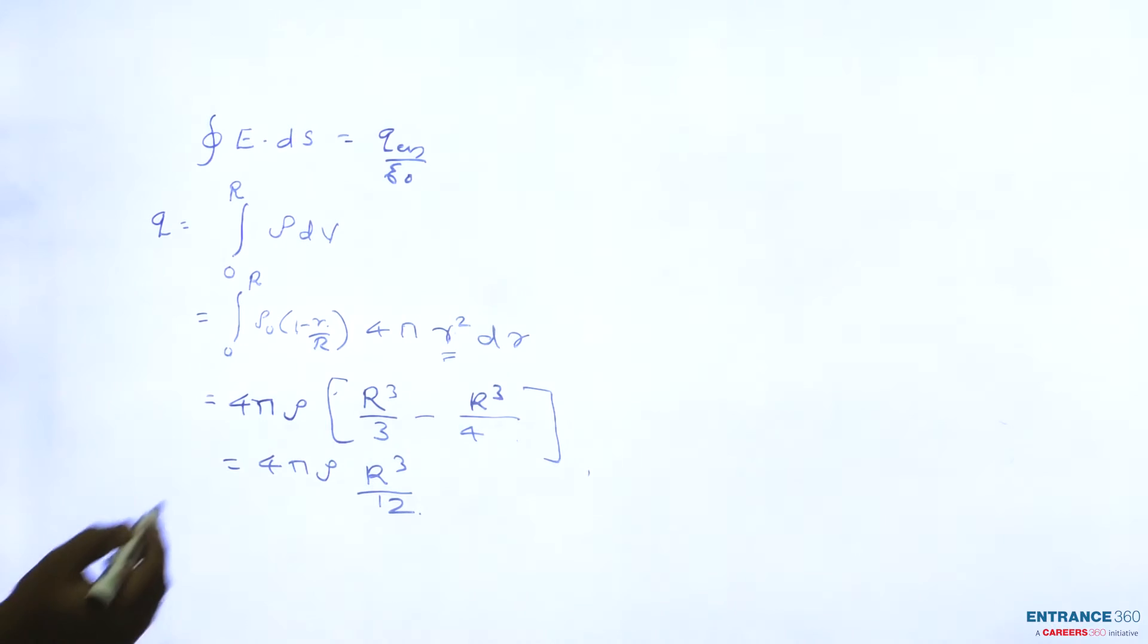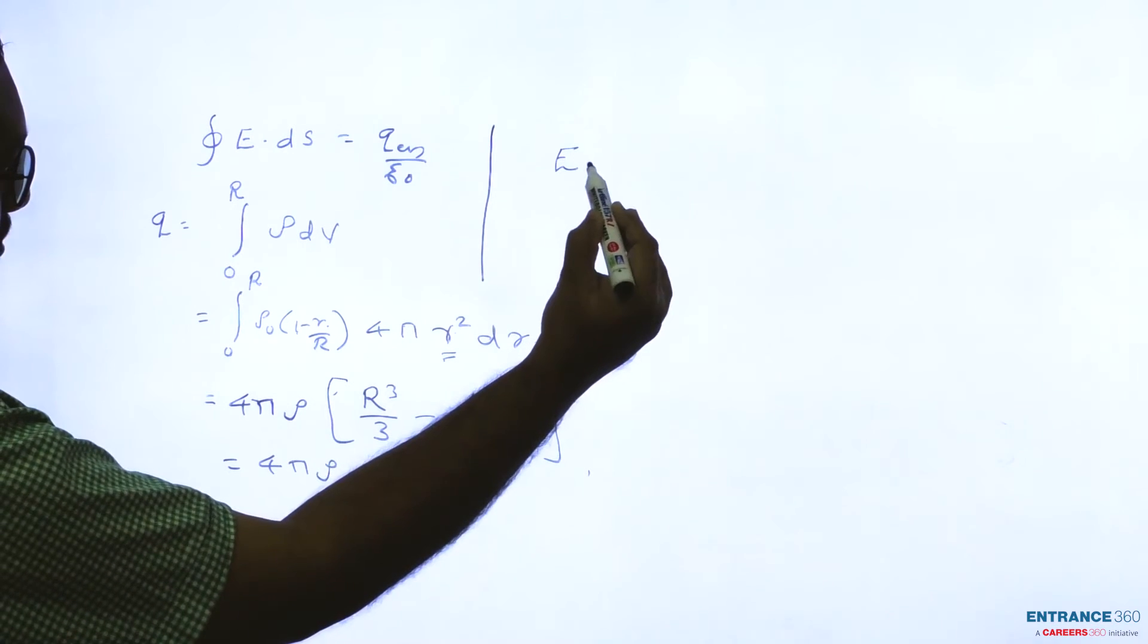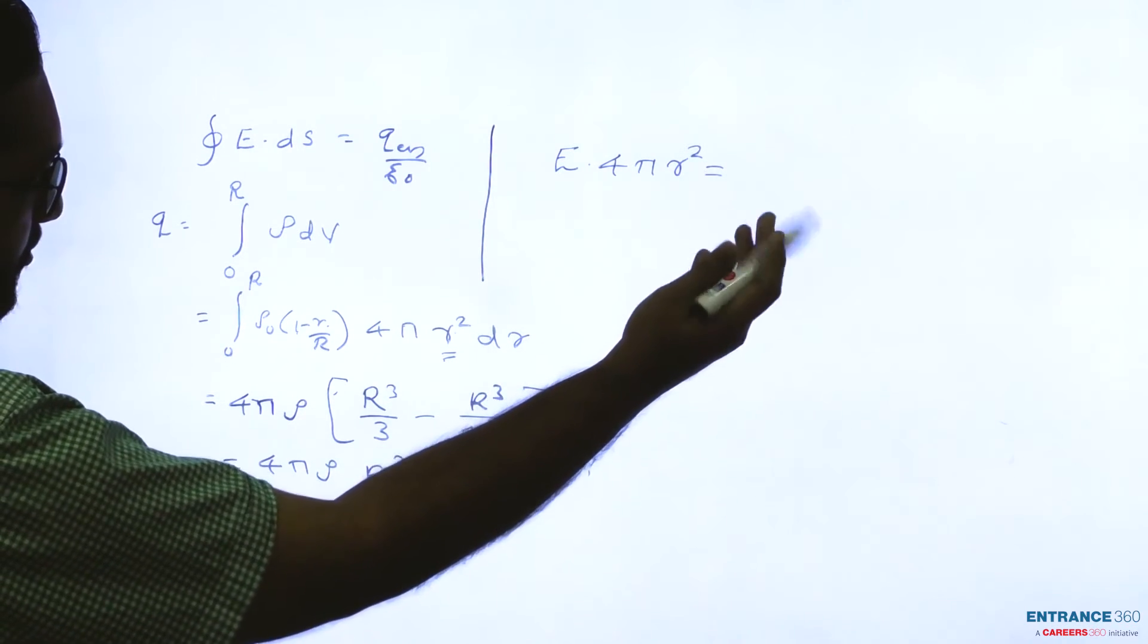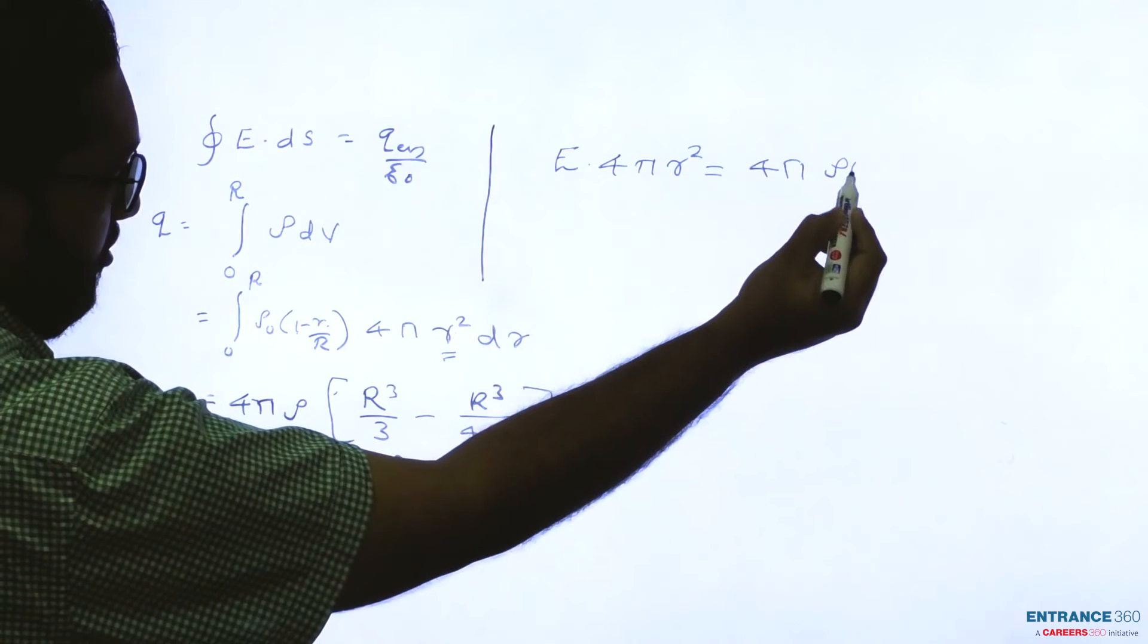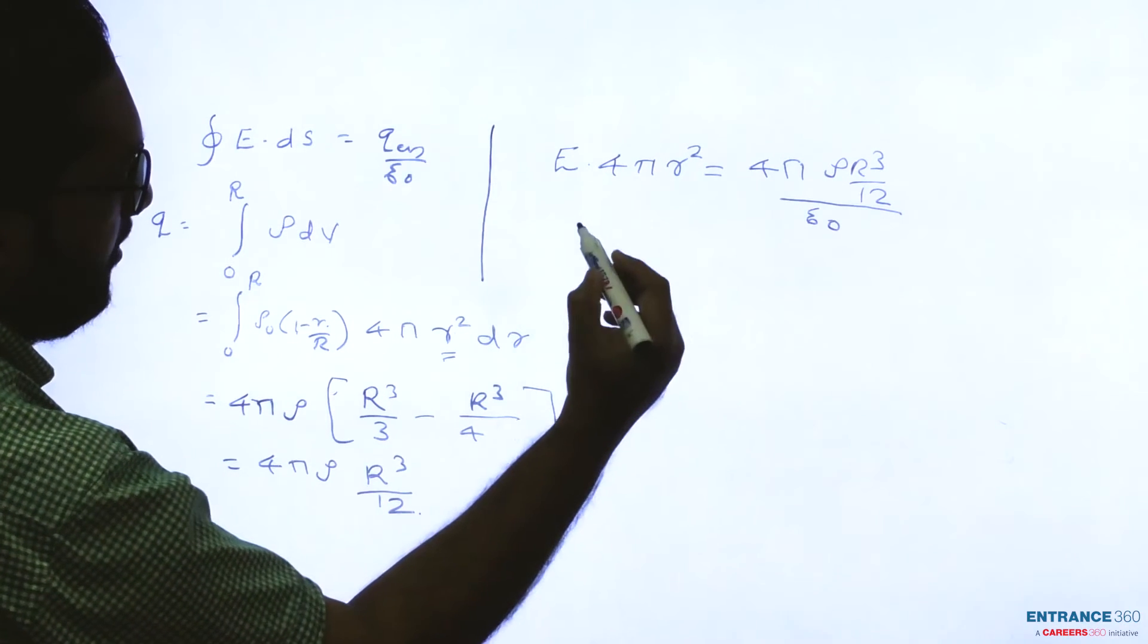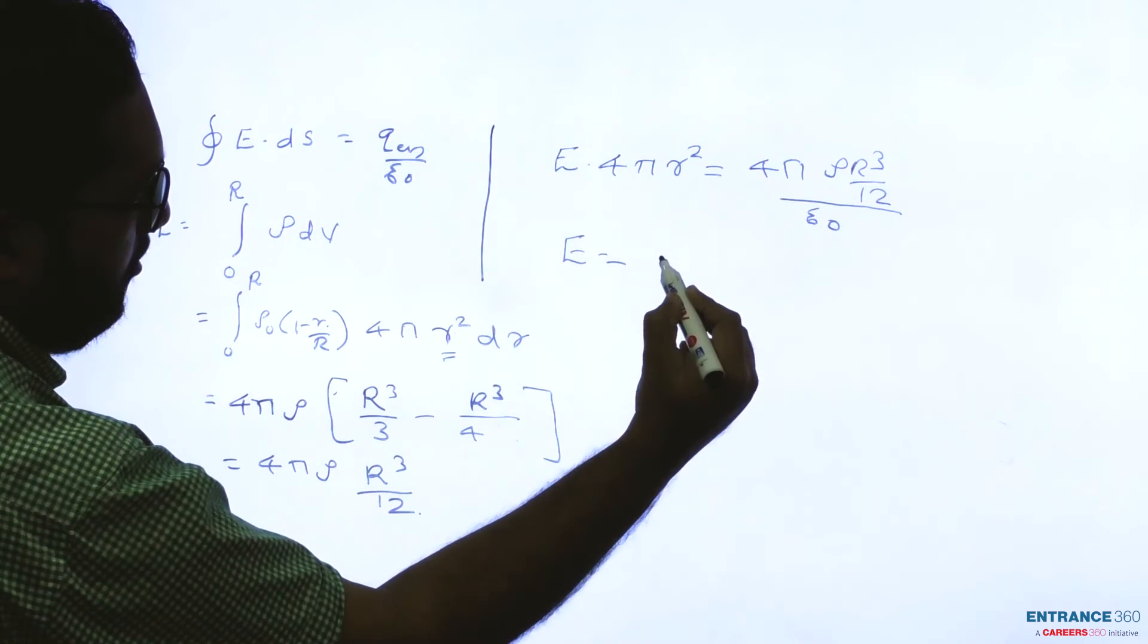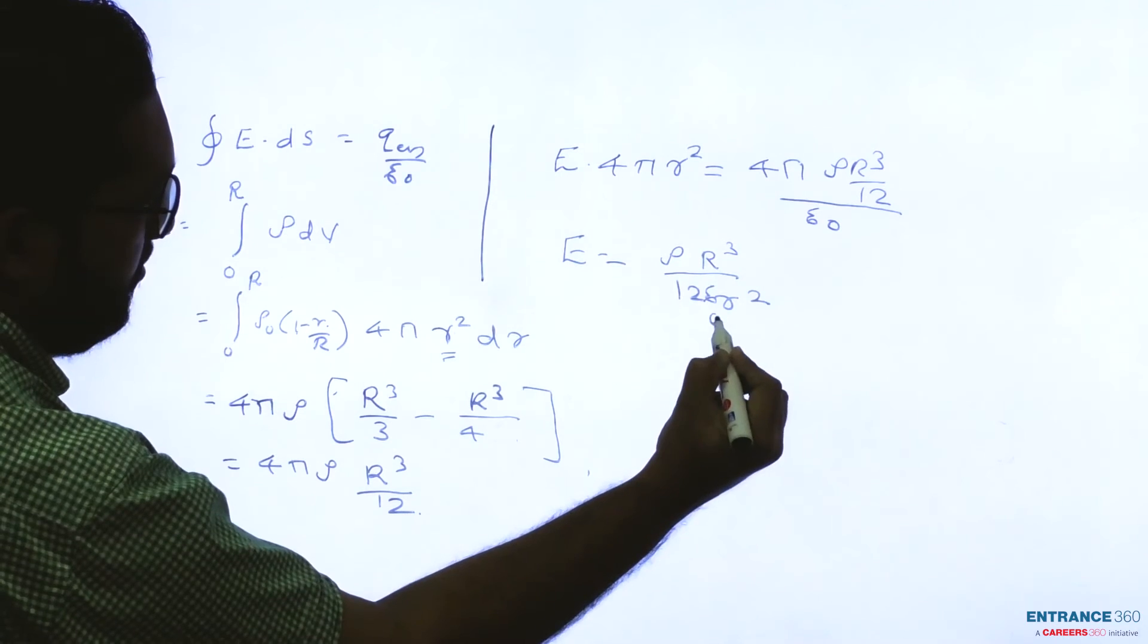We have to find electric field at a distance r outside the sphere. So electric field E into 4 pi r squared equals total charge enclosed by Gauss's Law, divided by epsilon_0, which equals rho_0 R cubed by 12 r squared epsilon_0.